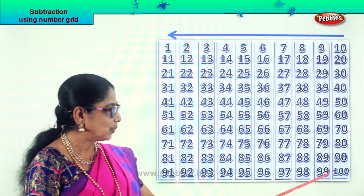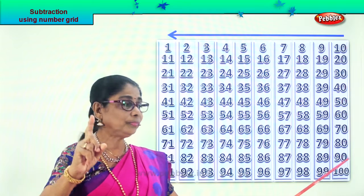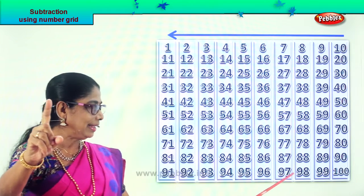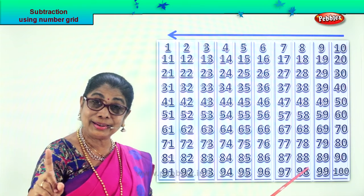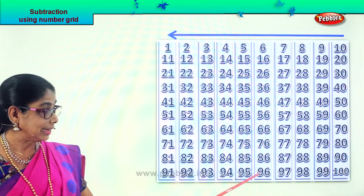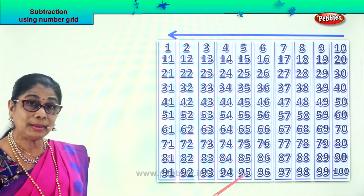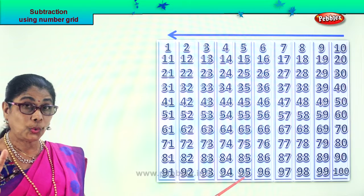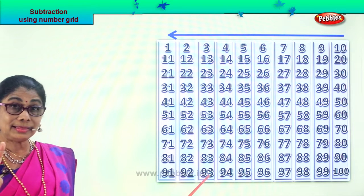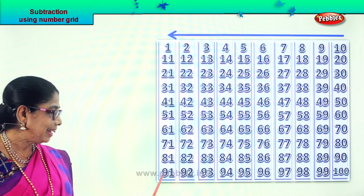Let's look at the last row here. From 100, if you take away — minus 1 — 99. 99 minus 1 — 98. 98 minus 1 — 97. 97 minus 1 — 96. 96 minus 1 — 95. 95 minus 1 — 94. 94 minus 1 — 93. 93 minus 1 — 92. 92 minus 1 — 91. Good.